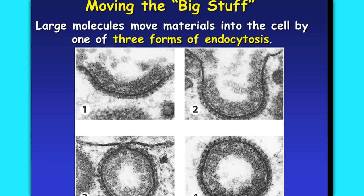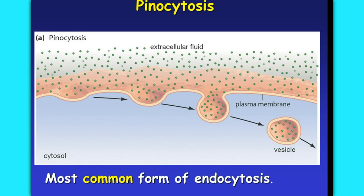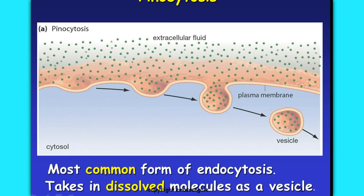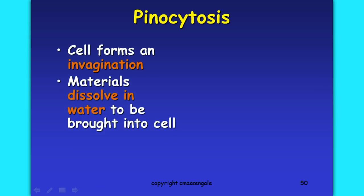We've also got the large movement of materials into the cell through one of three forms of what we call endocytosis — the movement of materials into the cell. The first example is pinocytosis, which moves extracellular fluid to the inside of the cell. It's a very common form of endocytosis that takes in dissolved molecules as a vesicle. Pinocytosis forms an invagination into the cell membrane, and materials dissolved in water are brought into the cell. It's typically referred to as 'cell drinking' because it takes in a liquid.